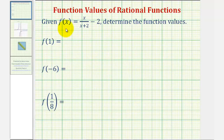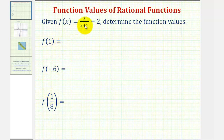We're given the rational function f of x, and asked to determine the following function values: f of one, f of negative six, and f of one-eighth. We'll first do this by hand, then check the function values on the graphing calculator, and then also take a look at the graph of f of x.